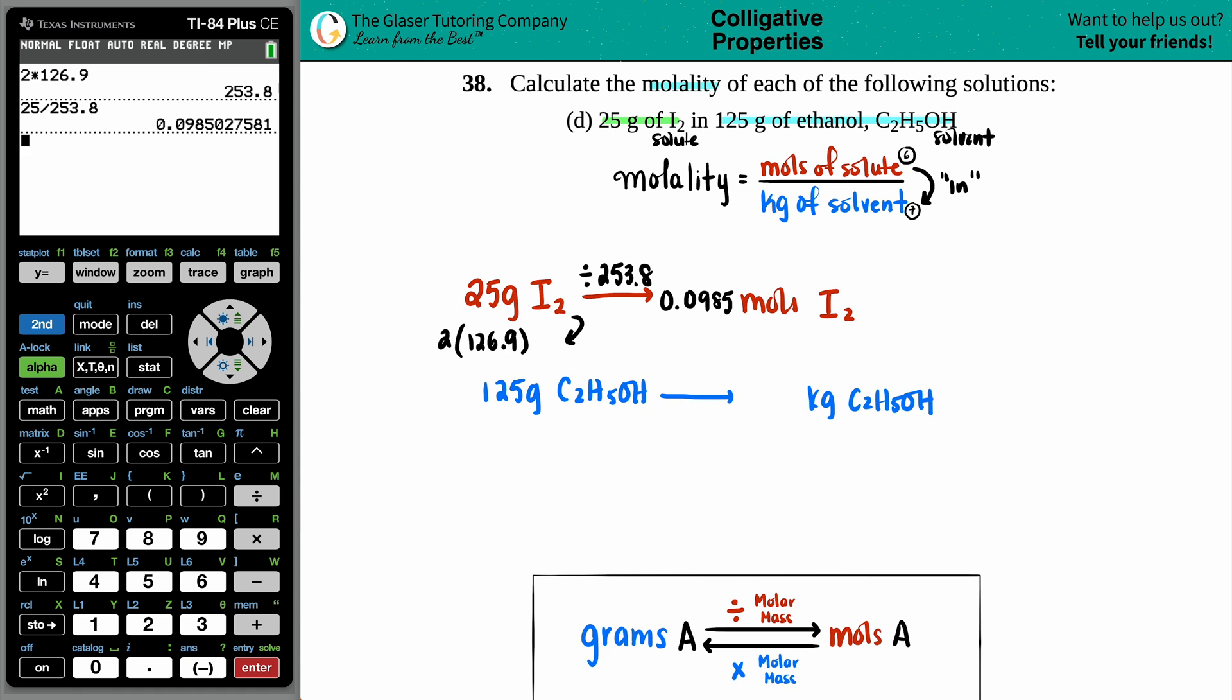How do we go from grams to kilograms? That's all the way back in the beginning, right? That's the SI unit conversions. Grams to kilograms is always just dividing by 1,000. Similarly, you could take the decimal and move it to the left three times. So this would be 0.125.